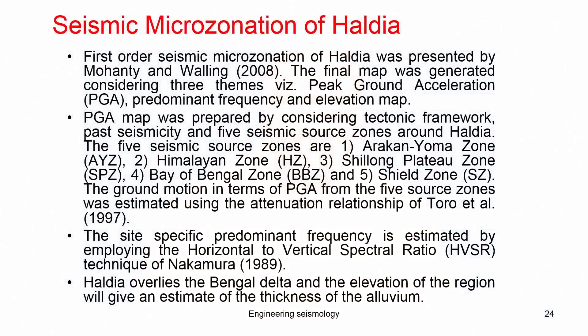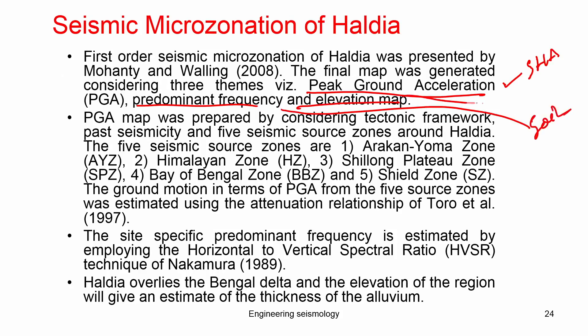The true microzonation involves integrating all possible hazards with proper weights and ranks depending on the region, and producing a final map in terms of hazard index value. The first-order microzonation map of Kolkata was presented by Mohanty and Walling in 2008. The final map was generated considering three themes: peak ground acceleration, predominant frequency, and elevation map — addressing seismic hazard, soil characteristics, and amplification respectively.